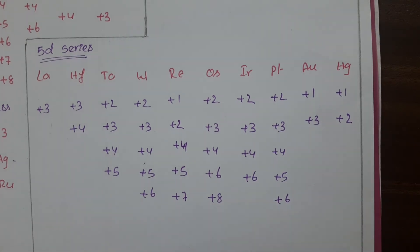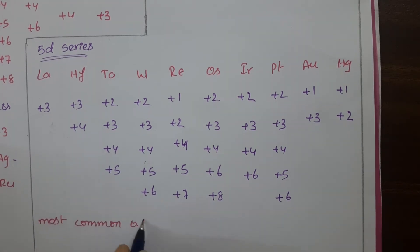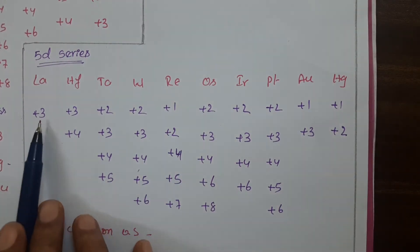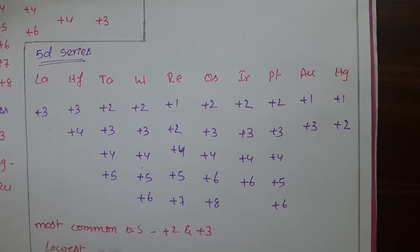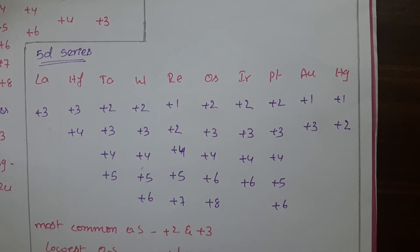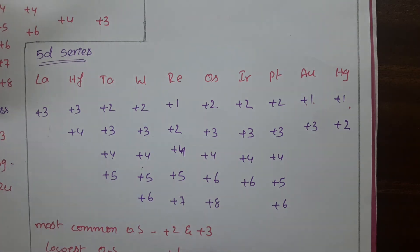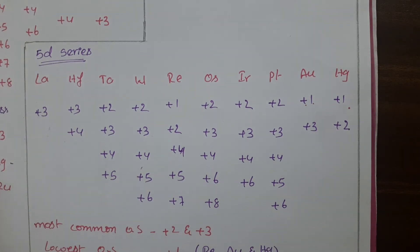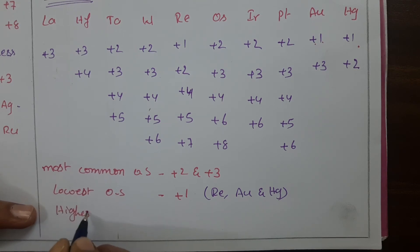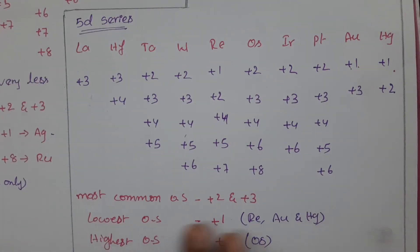Observing this series, the most common oxidation state is plus 2 and plus 3. The lowest oxidation state is plus 1, shown by three elements: rhenium, gold, and mercury. The highest oxidation state in this series is plus 8, shown by osmium. So this is about the 5d series elements and their variable oxidation states.